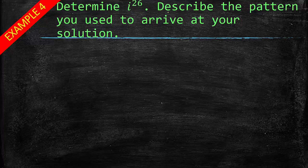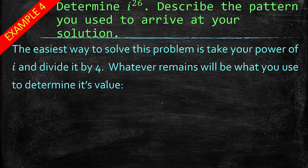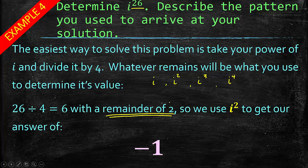Determine what i to the 26th power is. Describe the pattern you used to arrive at your solution. Here's where I show you the shortcut. Easiest way to solve this problem is take your power of i, so in this case 26, divide it by 4. Why 4? Well, if we go back, remember we had different things for i, for i squared, for i to the 3rd, and then for i to the 4th, and then it repeated itself. So if we divide by 4, we can keep coming back to this original thing here. Whatever's left over is what it'll be the same as being raised to the power. So for example, i to the 26th, we take 26, we divide it by 4, which is 6 with a remainder of 2. This is what we're looking for, whatever the remainder is. So we use i squared to get our answer because the remainder of 2 becomes i squared, which is negative 1. Nice and simple.